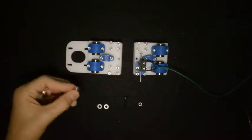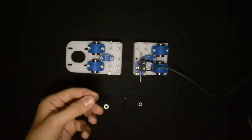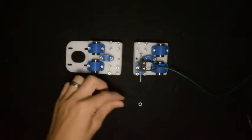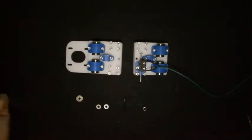For the next step, you will require the 624 bearing, two M4 washers, one M4 by 25 screw, and then also the M4 lock nut.